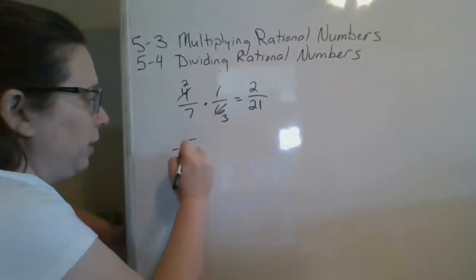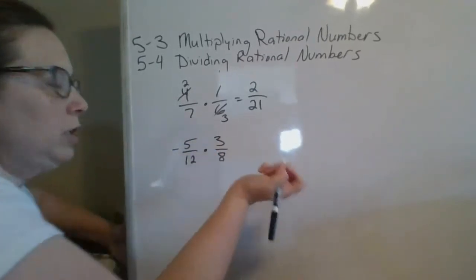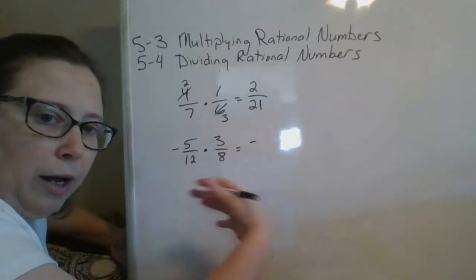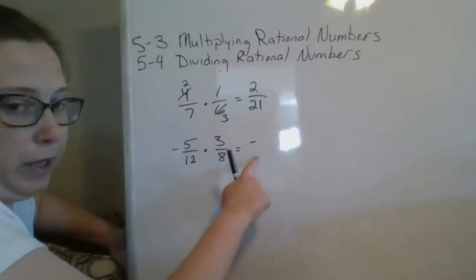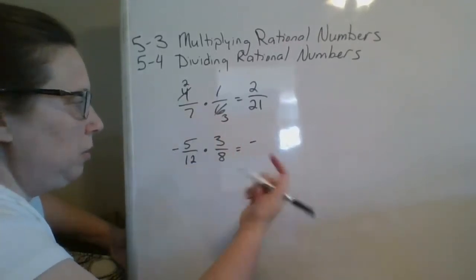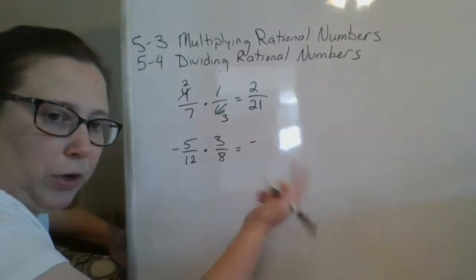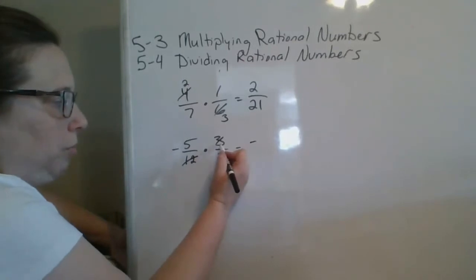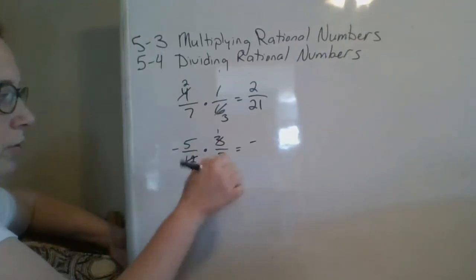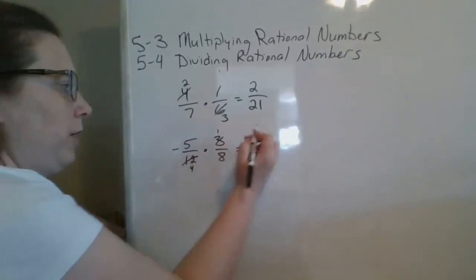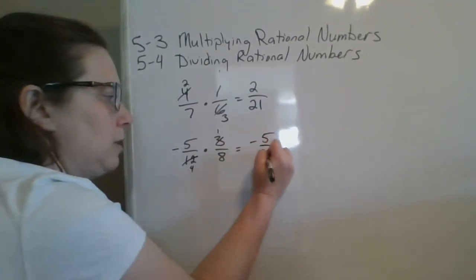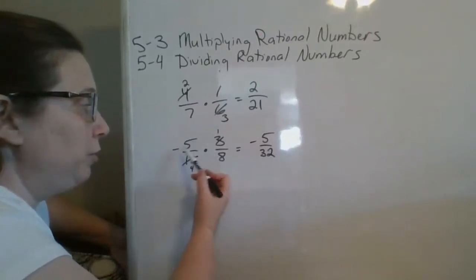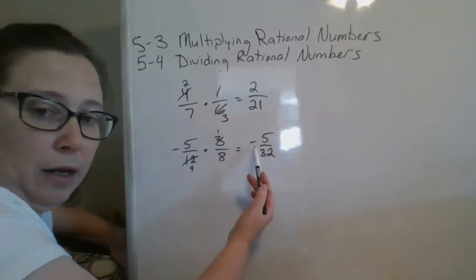Next up, I have a negative times a positive. Remember, negative times a positive — we have unlike signs, so our answer is going to be negative. We know that right away before we even multiply. I highly recommend you write that negative before you start to multiply so you don't forget it. Then I'm going to look for any common factors between my numerator and denominator so that I can cross-reduce. I notice that 3 goes into 3 and 3 goes into 12. So 3 divided by 3 is 1, and 12 divided by 3 is 4. No other common factors, so I can multiply: 5 times 1 is 5, 4 times 8 is 32. Negative 5 thirty-seconds for my answer. I highly recommend if you know your answer is going to be negative, go ahead and write that negative so that you don't forget it.